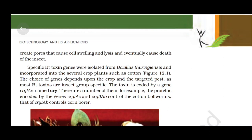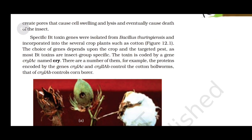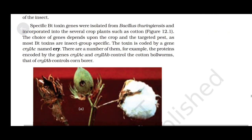Specific Bt toxin genes were isolated from Bacillus thuringiensis and incorporated into several crop plants such as cotton. The choice of gene depends upon the crop and the targeted pest, as most Bt toxins are insect-group specific. The toxin is coded by genes named cry. For example, the proteins encoded by the genes cryIAc and cryIIAb control the cotton bollworms, while cryIAb controls the corn borer.